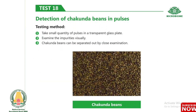Test 18: Detection of chakunda beans in pulses. Take a small quantity of pulses in a transparent glass plate and examine the impurities visually. Chakunda beans can be separated out by close examination.